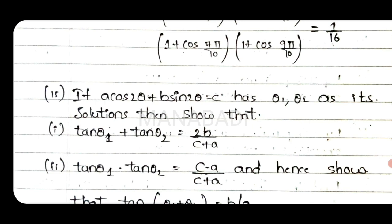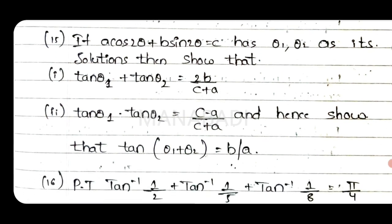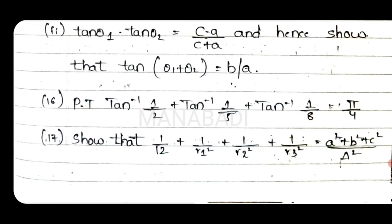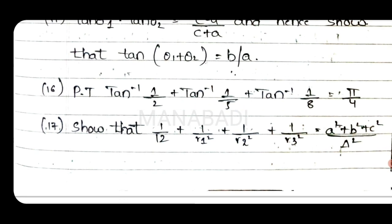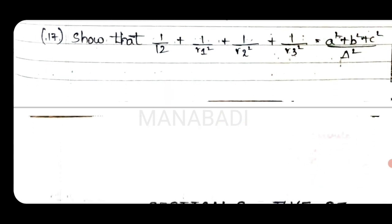Fifteenth question: If cos 2θ plus b sin 2θ equals c has θ₁ and θ₂ as its solutions, show that the required proof holds. Sixteenth question: Prove that tan inverse of some value plus tan inverse 1 by 5 plus tan inverse 1 by 8 equals π by 4. Seventeenth question: Show that 1 divided by r1 squared plus r2 squared plus r3 squared equals a squared plus b squared plus c squared divided by det squared.